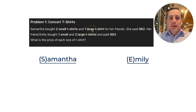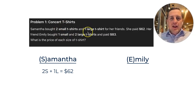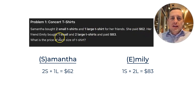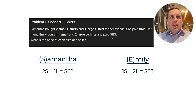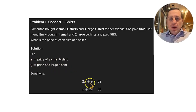We need to choose variables and set up a two-by-two system. Two times S plus one times L equals 62 for Samantha; one times S plus two times L equals 83 for Emily. Let X be the price of a small t-shirt and Y be the price of a large t-shirt. So 2X plus Y equals 62 and X plus 2Y equals 83.